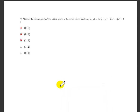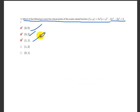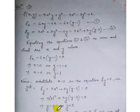Today we are going to solve the week 10 graded assignment. The first question asks which of the following are the critical points of the scalar-valued function f(x,y) = 3x²y + y³ - 3x² - 3y² + 2. The options are: (1) (0,0), (2) (0,2), (3) (1,1), (4) (1,2), and (5) (0,1).